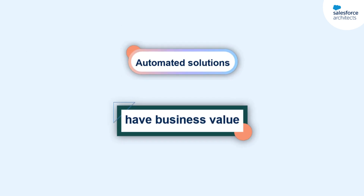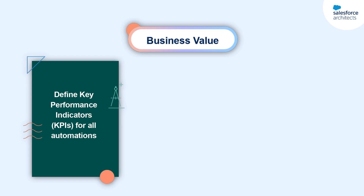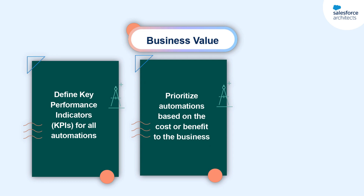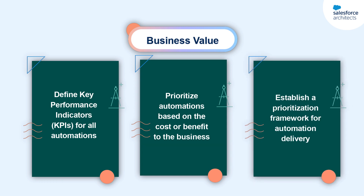Finally, an automated solution aligns to business value. You can be sure your automations align to business value by defining key performance indicators, or KPIs, for all your automations, and by prioritizing what you automate based on the actual cost or benefit the business will see when their process is automated. Establishing a prioritization framework for automation delivery will help you manage user expectations and stay aligned with your roadmap.